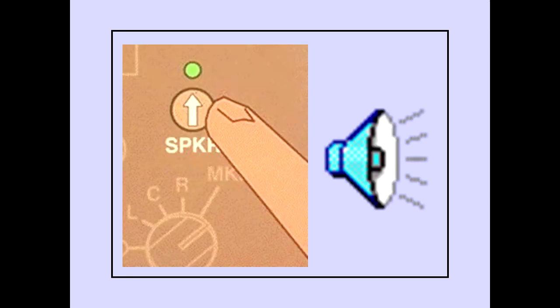When the speaker is selected, the green indicator illuminates. The volume is adjusted by rotating the switch. The speakers are located to the side of the captain and first officer.